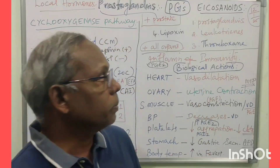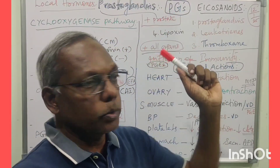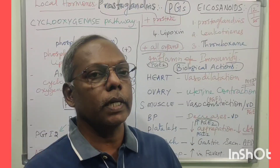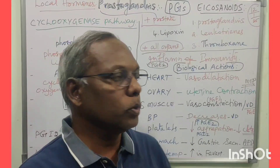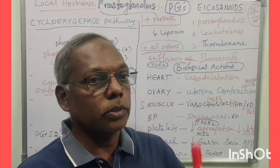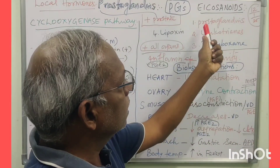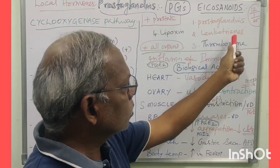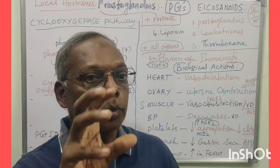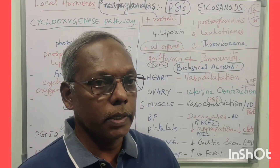The actual abbreviation is PGs. Prostaglandins act as local hormones. The Eicosanoids are: Prostaglandins, Leukotrienes, Thromboxane, and Lipoxin. These are Eicosanoids — that is, 20-carbon long-chain fatty acids.